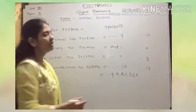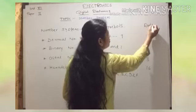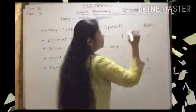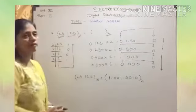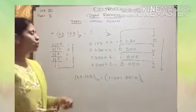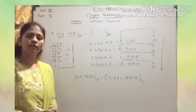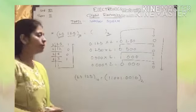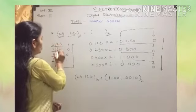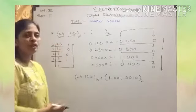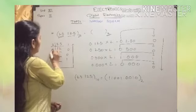This shows the radix of the number system. Now there is a fractional part. First we have to convert the integer part by using the divide-by-2 method. Here, 25 is divided by 2, giving quotient 12 and remainder 1.